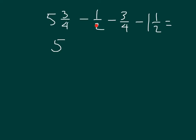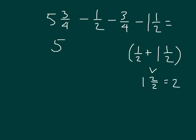Then we are taking away a half as well as 1 and 1 half. If I combine those two, I'm taking away 2. 1 half plus 1 and 1 half does equal 1 and 2 halves, which equals 2. So I'm taking away 2 from 5, and 5 minus 2 is 3.